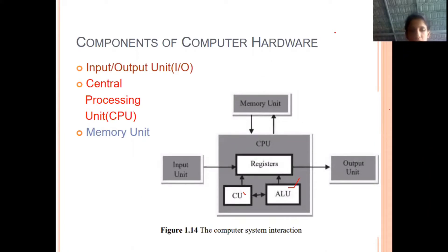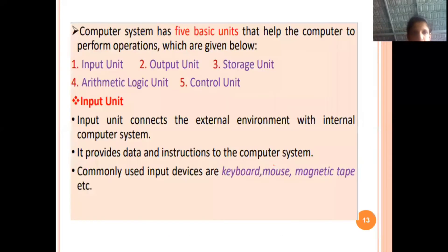As you see in this diagram, we have the input unit, then the output unit, then the memory unit, and the CPU which consists of the control unit and the arithmetic and logic unit. Registers are a sort of memory and are used for temporary data storage.